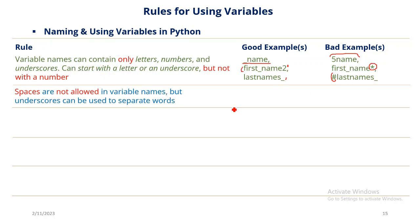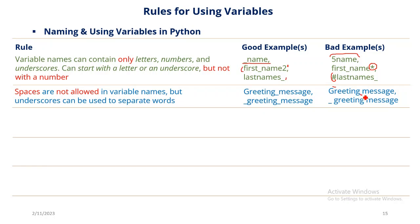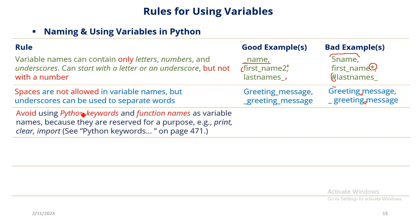Avoid using Python keywords and function names as variable names because they are reserved for a purpose. For example, we have been using 'print' and 'import'. There are a plethora of Python keywords in the textbook we are using — Eric Matthes, page 41 — and you can also find them by searching 'Python keywords' on Google. Make sure you don't use any of them as variable names.